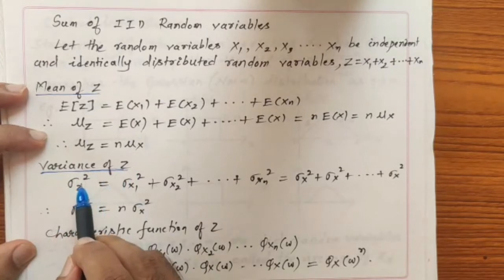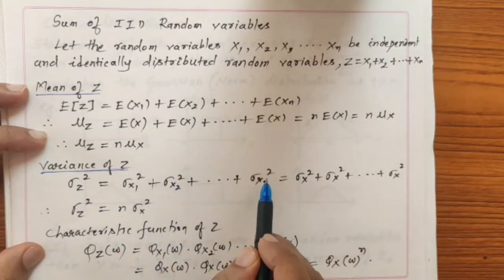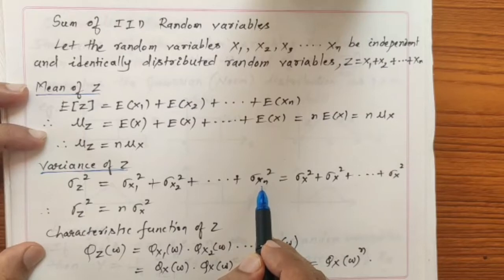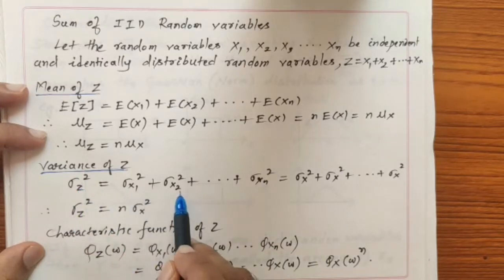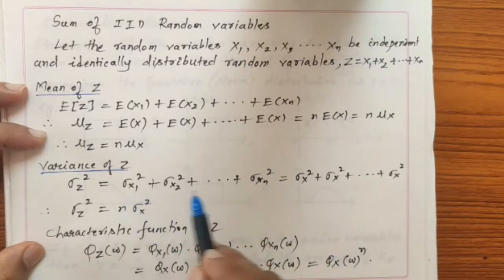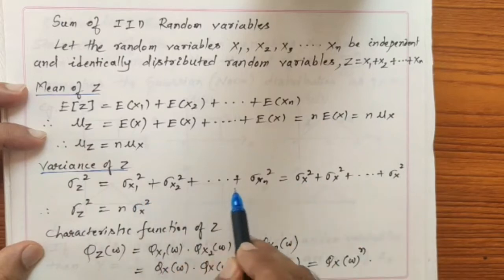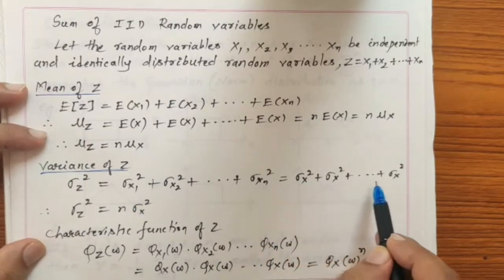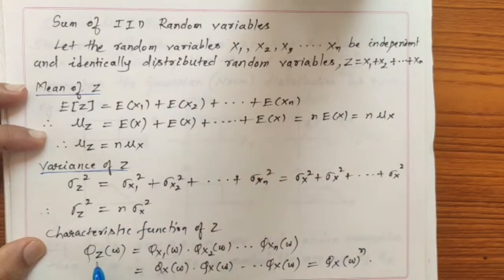Similarly, we can find the variance of Z. Since X1, X2, ..., Xn are independent — as we already proved in a previous video — the variance of Z equals variance of X1 plus variance of X2 plus ... plus variance of Xn. Since the variables are identically distributed, each variance equals σx². This sum appears n times, so the variance of Z is n times σx².